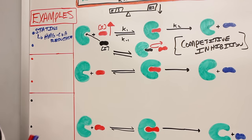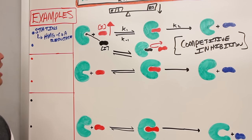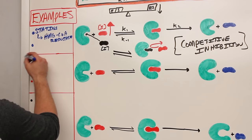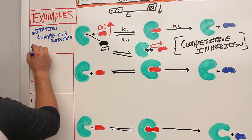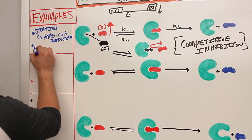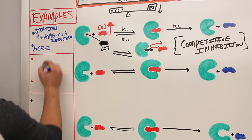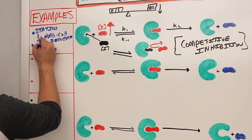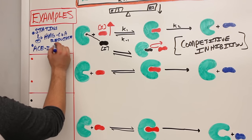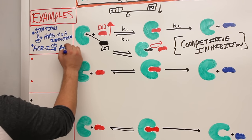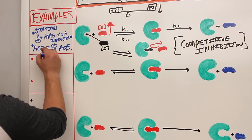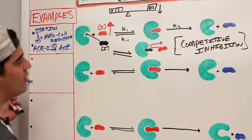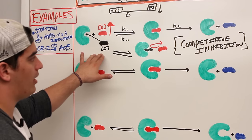Drugs can act as competitive inhibitors — and that can be a good thing. For example, statins are used to lower cholesterol levels in hyperlipidemia and hypercholesterolemia. Statins bind onto the active site of HMG-CoA reductase, the enzyme that regulates cholesterol synthesis. Another example is ACE inhibitors like captopril, enalapril, and azonapril, which bind to the active site of ACE — angiotensin converting enzyme — and are used to treat high blood pressure.